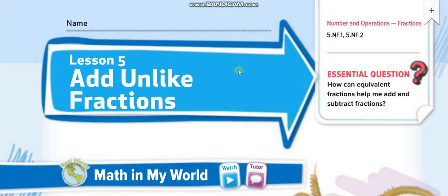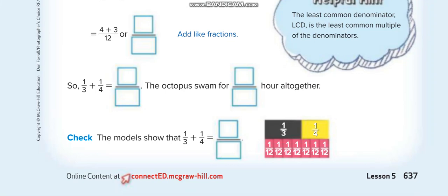Hey everyone, welcome back to my channel Learn Math with Mr. Sad, for another video lesson. Today's lesson is for grade 5, chapter 9, lesson 5: Add Unlike Fractions. The page number is 637.